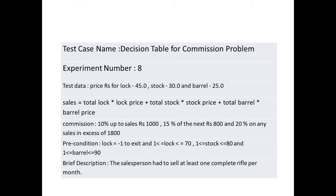We have locks, stocks, and barrels. The cost for each lock, stock, and barrel is given. The sales are calculated as: total locks multiplied by lock price, plus total stocks multiplied by stock price, plus total barrels multiplied by barrel price.